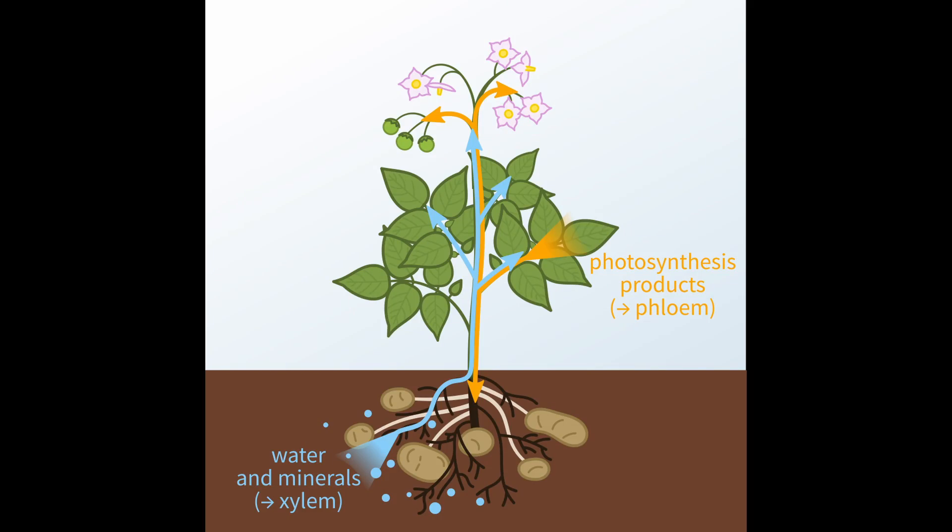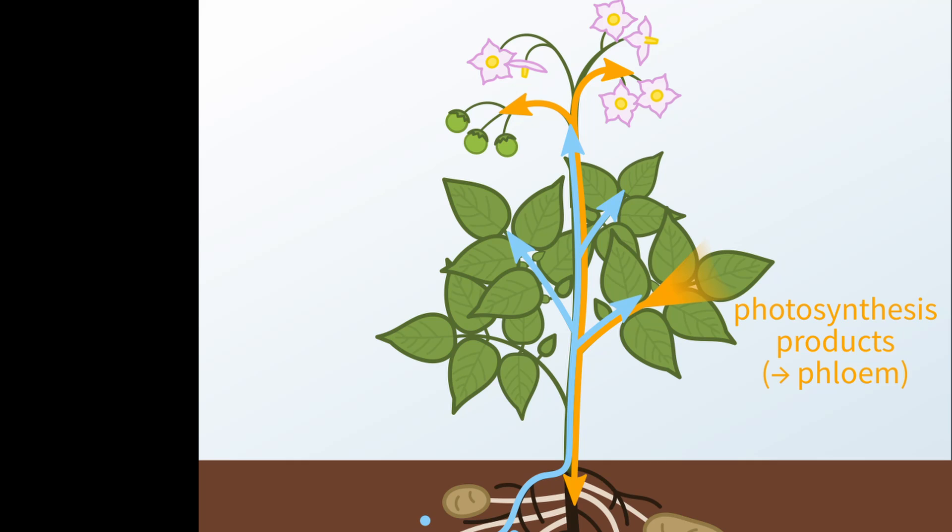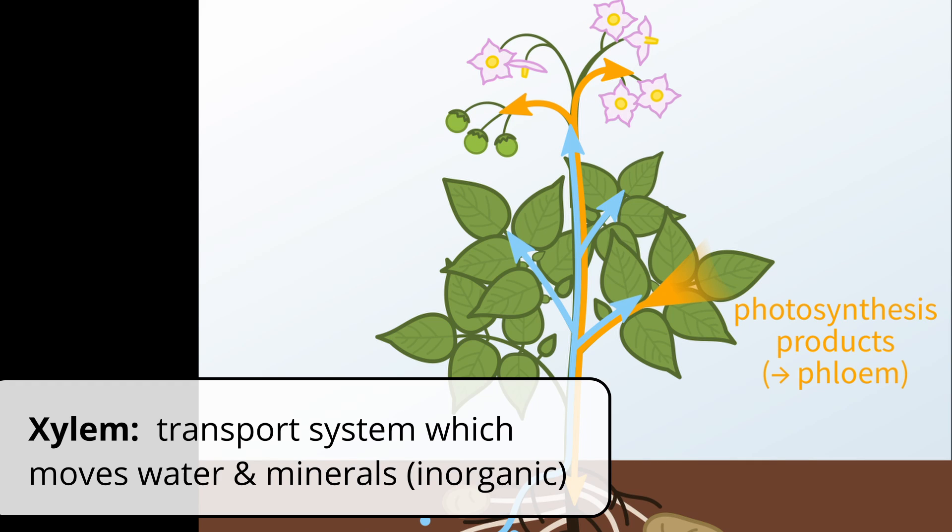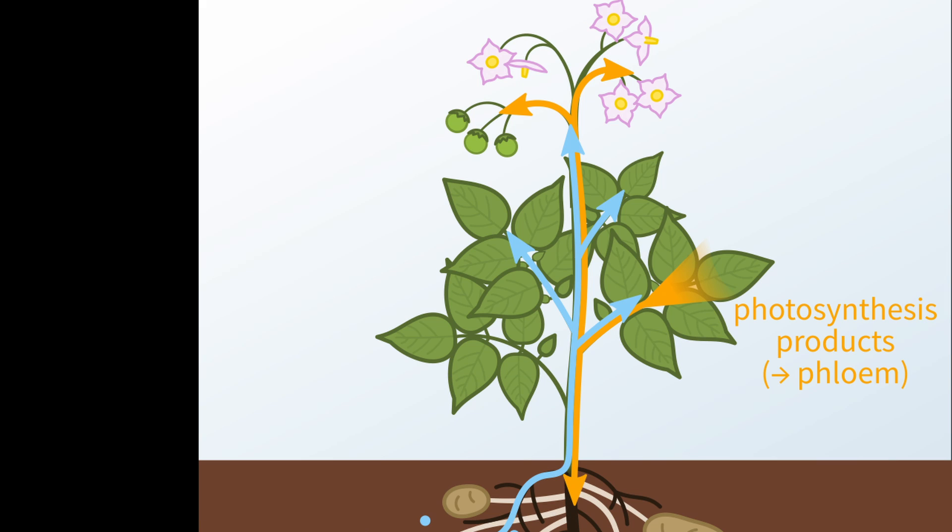Once the sugar is brought into these phloem cells from where they're made, they get moved to other areas of the plant where they're needed. You may remember that xylem moves in one direction, from the roots to the top of the tree. Phloem instead moves in different directions, from where it's made to where it's needed. So where it's made is called the source, and it moves to the sink. The most accepted explanation for how this works is called the pressure flow hypothesis.